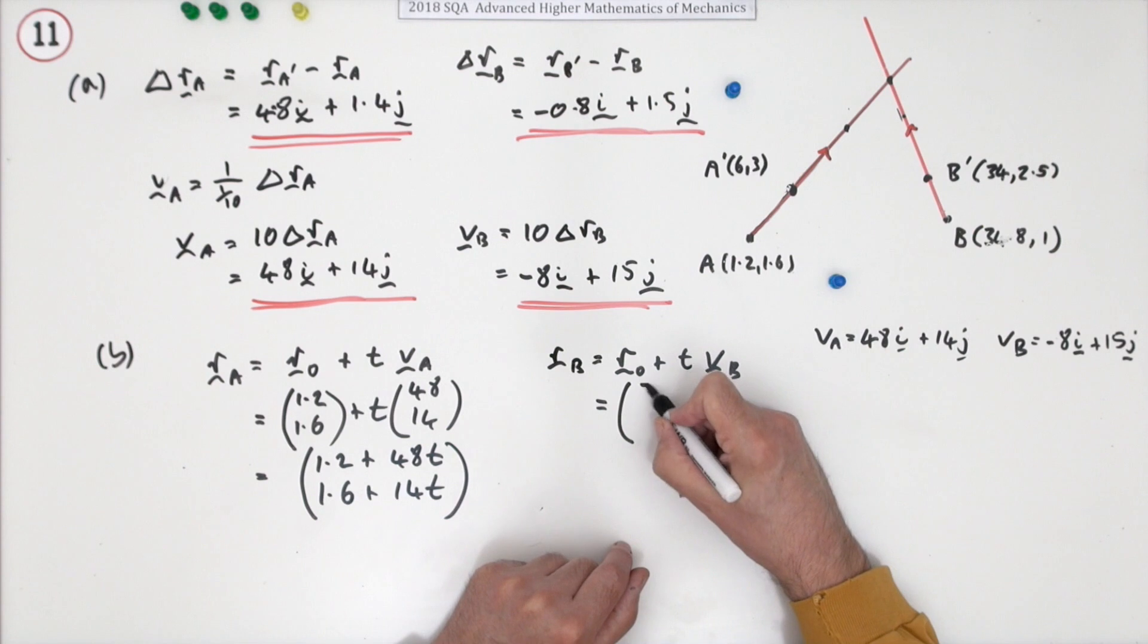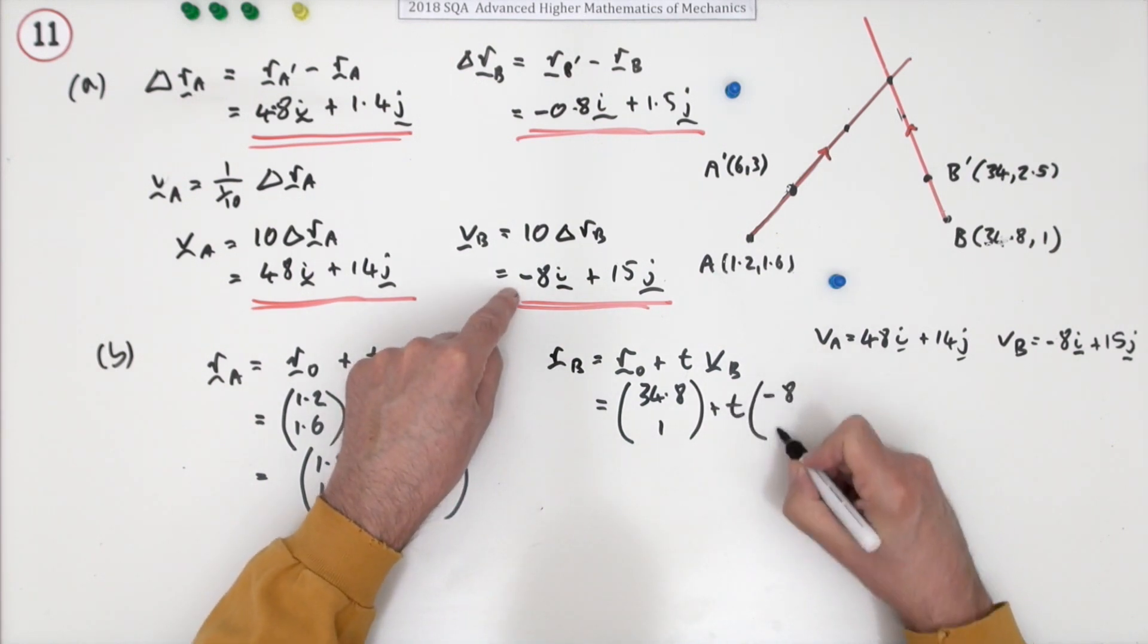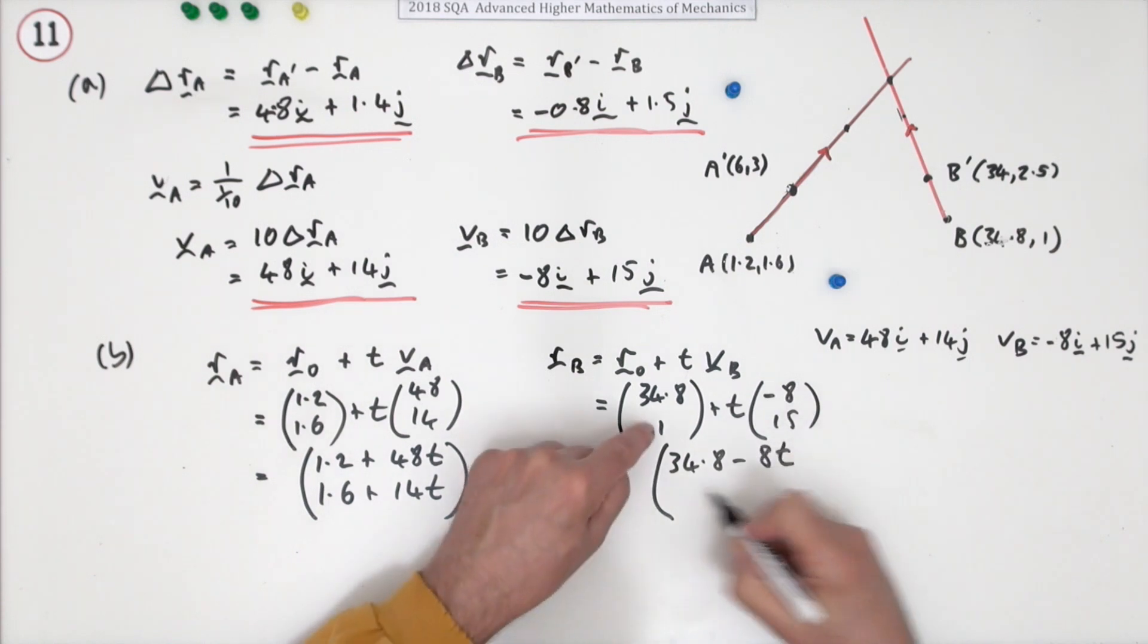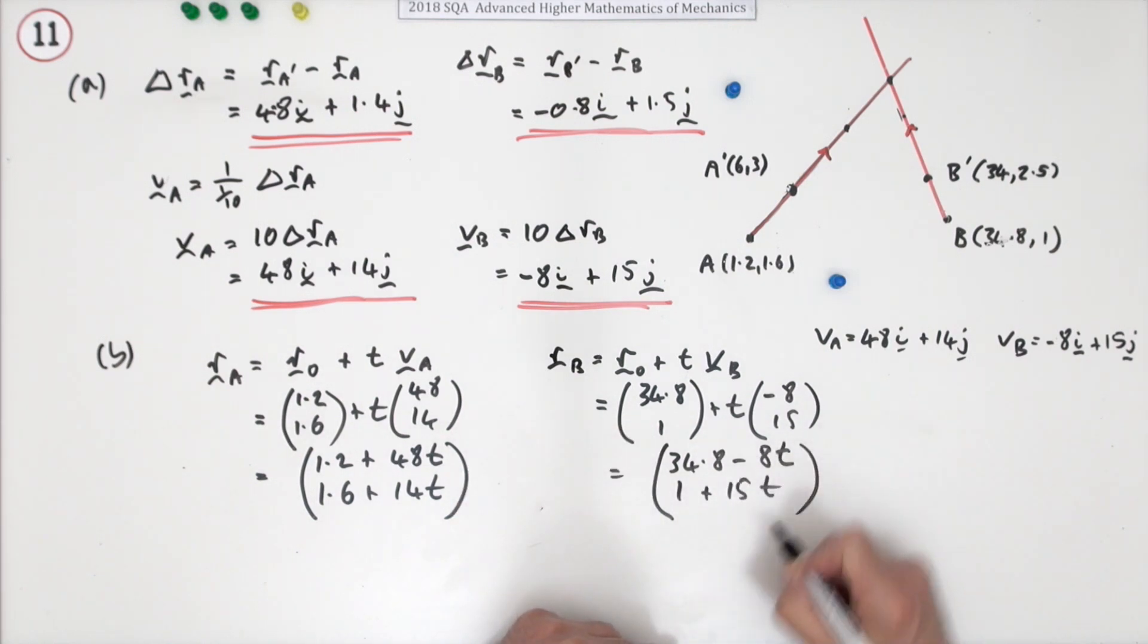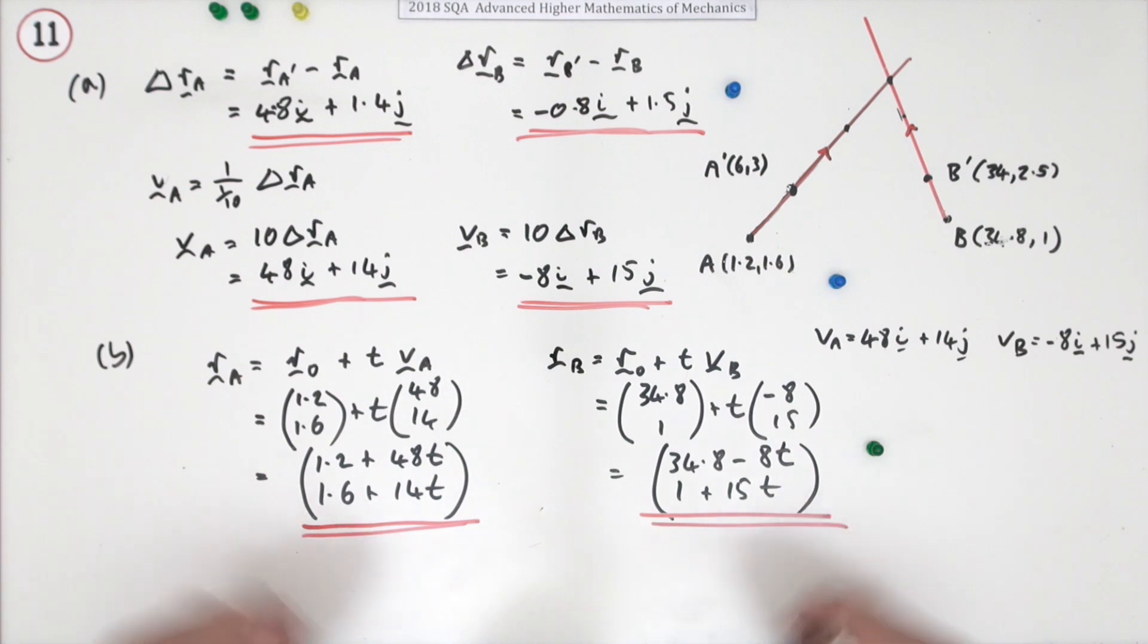And this one, r_0 was (34.8, 1) and I'm going to add on t lots of (-8, 15), so the position vector of B at any given point will be (34.8 - 8t, 1 + 15t). Now you can either write it in that form or you can put it back into the unit base vectors. This was only worth one mark for getting these two values for the position vectors at any given time, which is the whole main point of the question really.